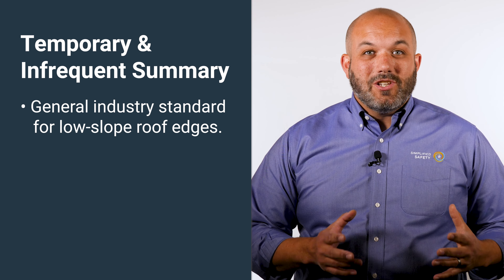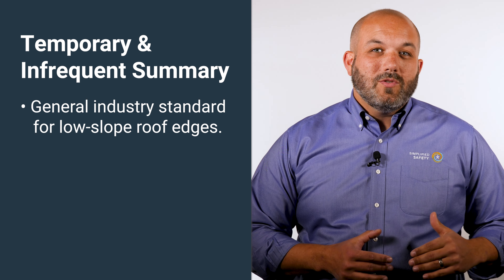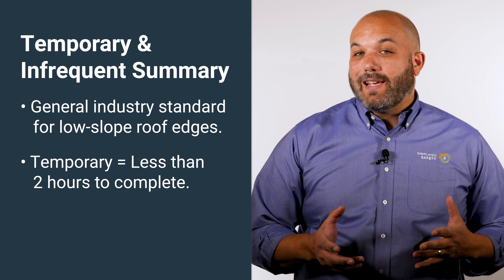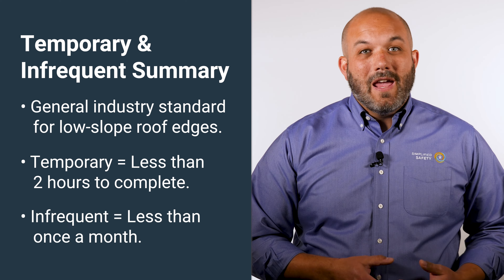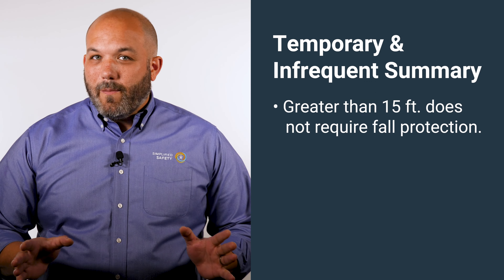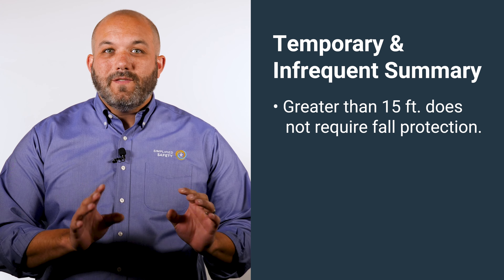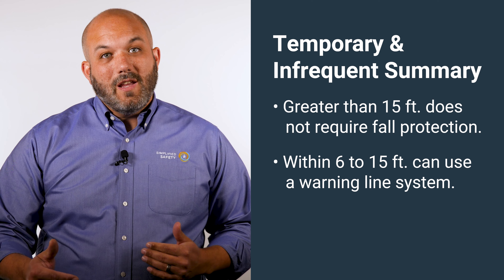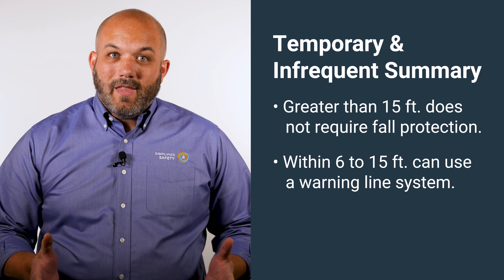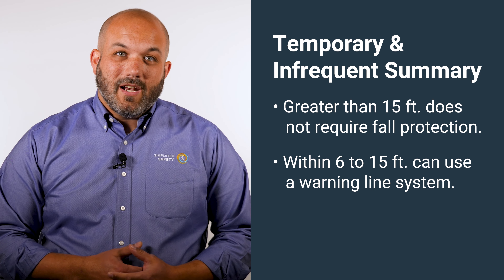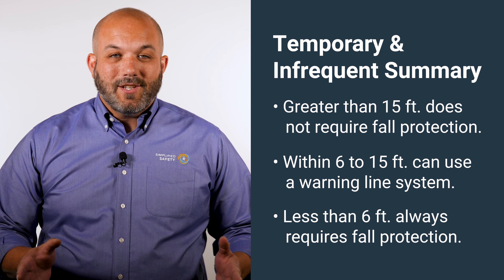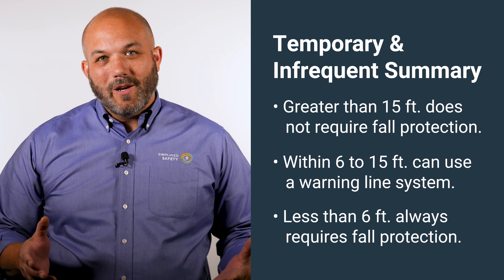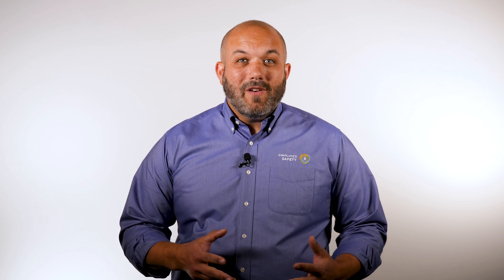Let's wrap this up in just a few quick points. Temporary and infrequent is a general industry standard for low-slope roof edges. Temporary means the work takes less than 2 hours to complete, and infrequent means the work happens less than once a month. No fall protection is required if you're more than 15 feet from the roof edge and the work is temporary and infrequent. If you're within 6 to 15 feet of the roof edge and the work is temporary and infrequent, you can use a warning line system instead of standard fall protection. And if you're within 6 feet of the roof edge, it doesn't matter if it's temporary and infrequent — you need standard fall protection.